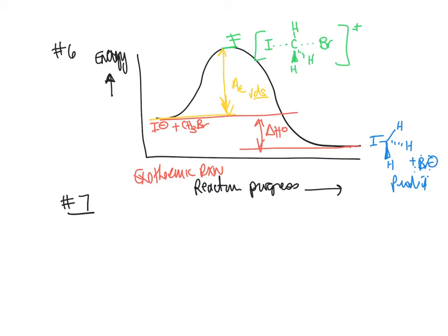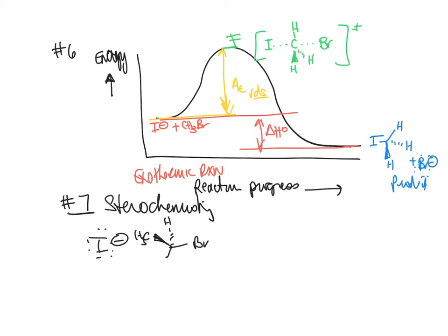Now we're focusing on stereochemistry — Question 7. You have iodide as your nucleophile and a real stereocenter, because this carbon is connected to four different things. Determine whether this is R or S. Set your priorities: bromine is 1, hydrogen is 4. You have two carbons — the one going to another carbon is 2, and the other is 3. Connect 1, 2, 3 — that turns the steering wheel to the right, clockwise, and hydrogen is in the back, so R stays R.